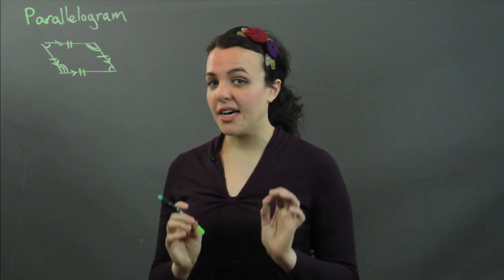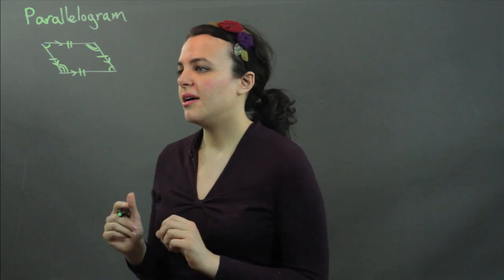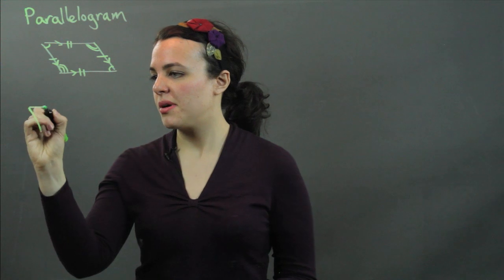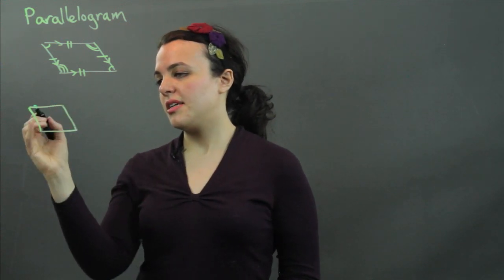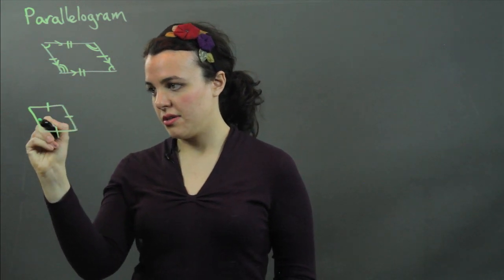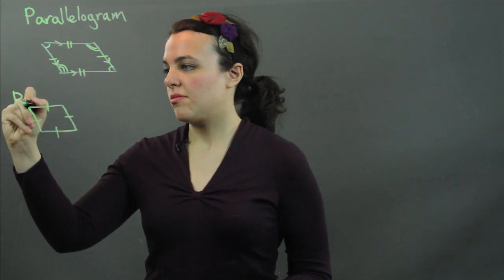And then there are specific types of parallelograms that get even more specific. We'll start with a rhombus. A rhombus is a parallelogram. It has all the qualities of a parallelogram, except all four sides are congruent. That is the rhombus.